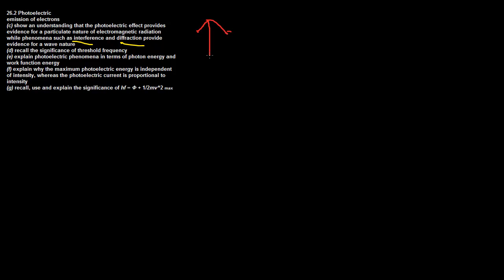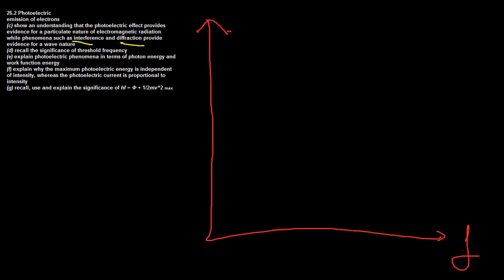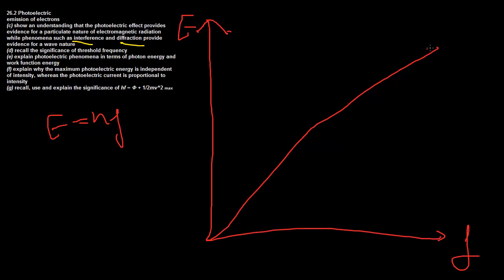I'm going to draw a graph of energy versus frequency for electrons. I'll put frequency on the x-axis and energy on the y-axis. We know by the equation E equals hf — h is a constant — so it should look like a straight line. And then I'm going to put another line here.